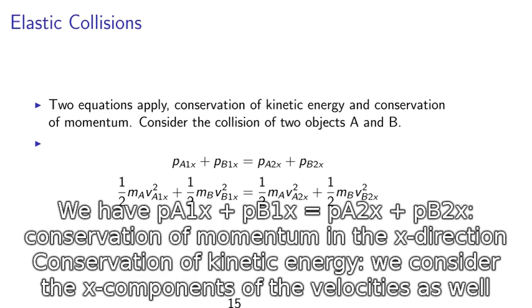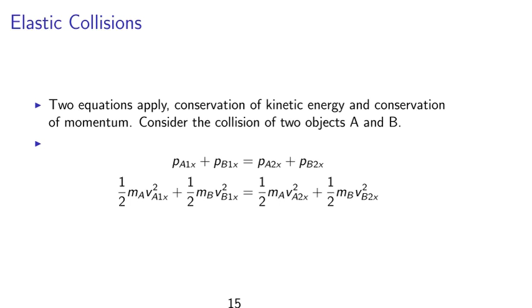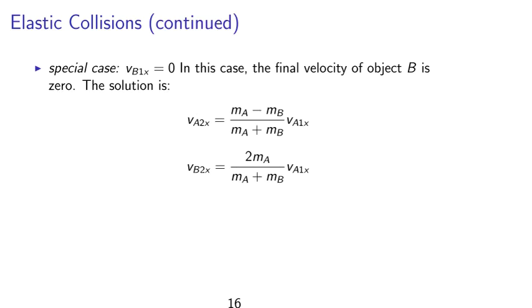We have pa1x plus pb1x equals pa2x plus pb2x for the conservation of momentum in the x direction. And for the conservation of kinetic energy, we only consider the x components of the velocity as well. Half ma va1x squared plus half mb vb1x squared equals the equivalent for the final velocities, va2 and vb2.